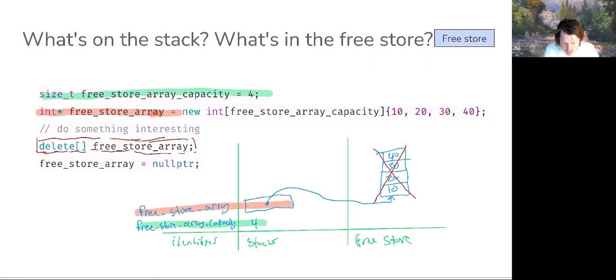It's not, however, going to zero out any of that memory just yet. So the values 10, 20, 30, and 40 will continue to live on until the free store manager decides to allocate that block or any part of those blocks of memory for use with something else.